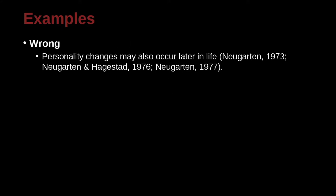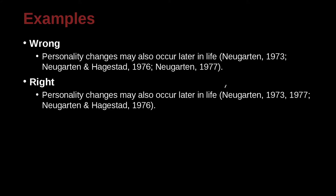Personality changes may occur later in life (Newgarten, 1973; Newgarten & Hasgard, 1976; Newgarten, 1977). In this case, we have the same author but different years. We also have one author with a different co-author. Since Newgarten is the same person, we combine the dates by splitting them with a comma, and the smallest date goes first — so 1973 is first and 1977 is second.